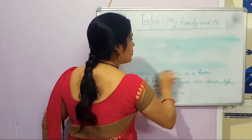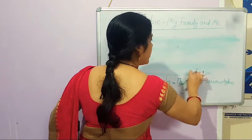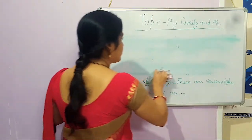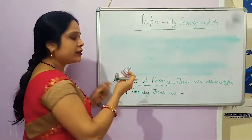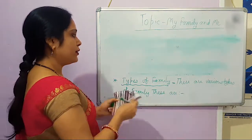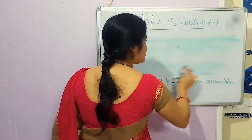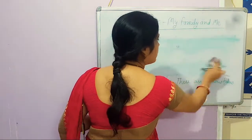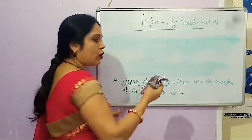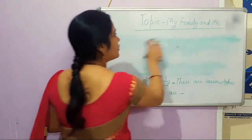Another family is joint family. And the third one is single parent family. You can understand one by one all the types of the family.